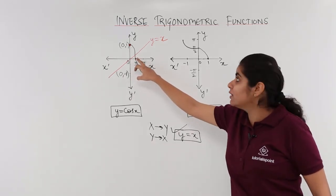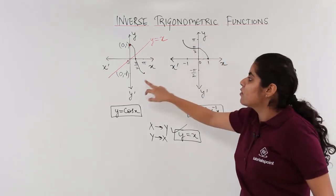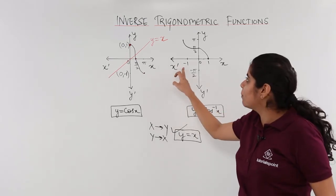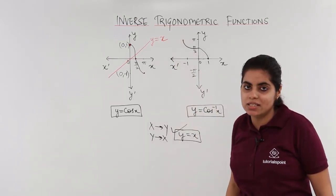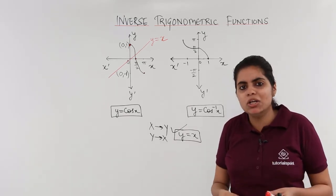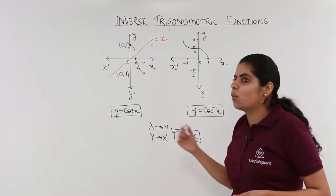Where pi by 2 was on the x-axis, now pi by 2 is on the y-axis. Where minus 1 is on the y-axis, here minus 1 is on the x-axis. So the criteria is very simple. Draw the mirror image. If you don't get the idea of mirror image, just interchange the x-axis and the y-axis.